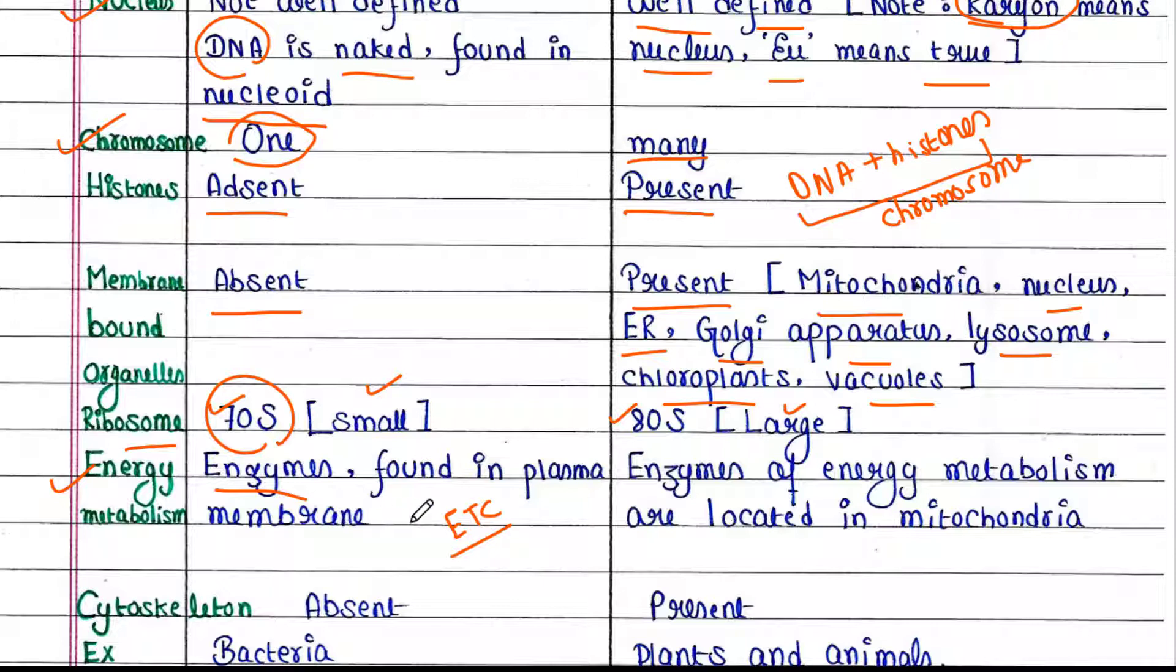Since prokaryotic cells lack mitochondria, those enzymes are found in the plasma membrane. But in eukaryotes, the enzymes required for the electron transport chain are located in mitochondria.